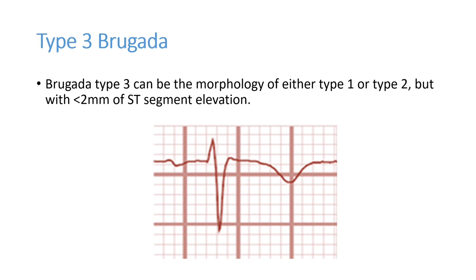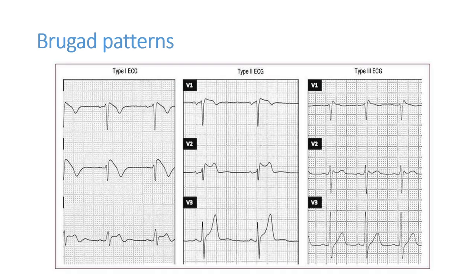Type 3 Brugada pattern: the morphology can be either Type 1 or Type 2, with an RSR' pattern and ST elevation, but the ST elevation is less than 2 mm — compared to Type 1 which is more than 2 mm. In summary: Type 1 shows RBBB pattern, ST elevation more than 2 mm, T wave inversion; Type 2 shows saddleback ST elevation with RSR' pattern; Type 3 shows ST elevation less than 2 mm. All three types have an RBBB-like pattern with ST elevation.